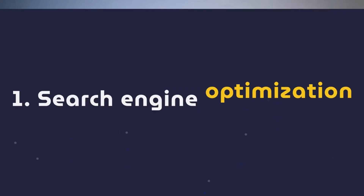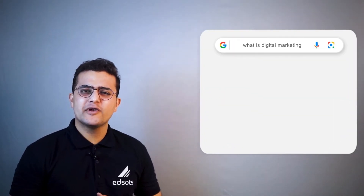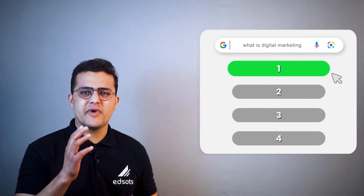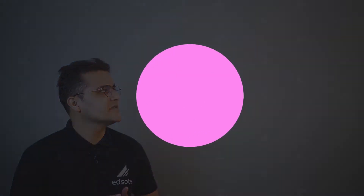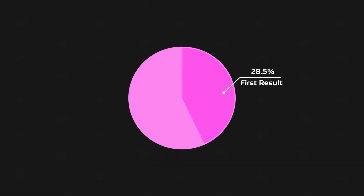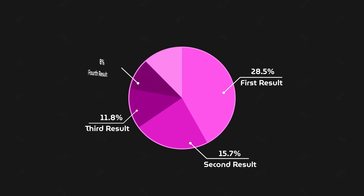Number one is search engine optimization. Do you know that on Google, the maximum number of people click on the first result? Let me show you with the data. 28.5% of people click on the first result, then 15.7% on the second result, 11% on the third, then 8% on the fourth.